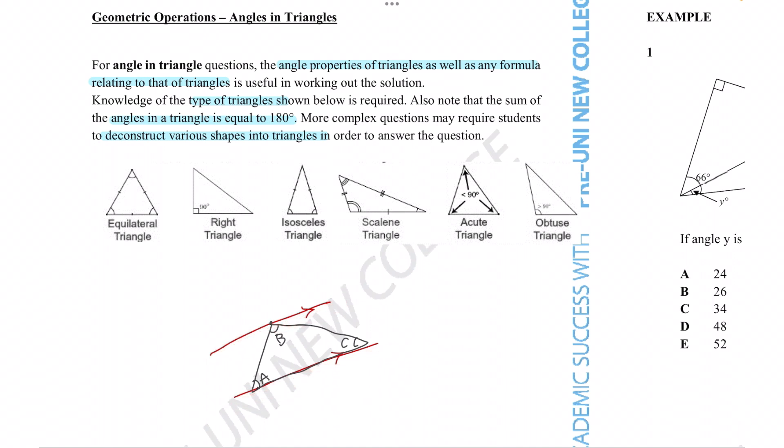That means this angle right here is also angle A since these angles are alternate. And with that same theory, these two angles are also alternate. So this angle is angle C as well.